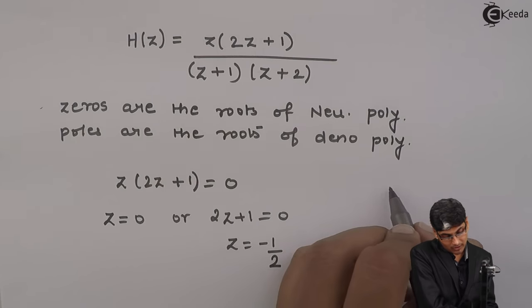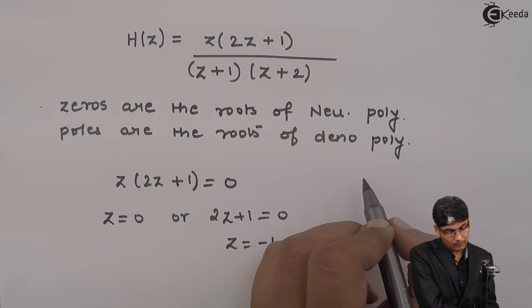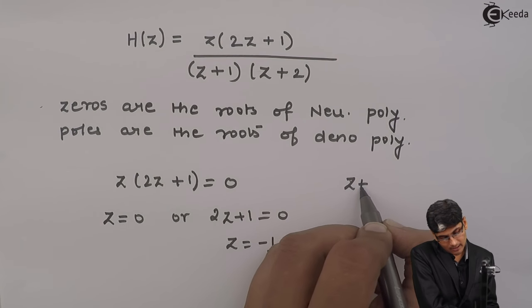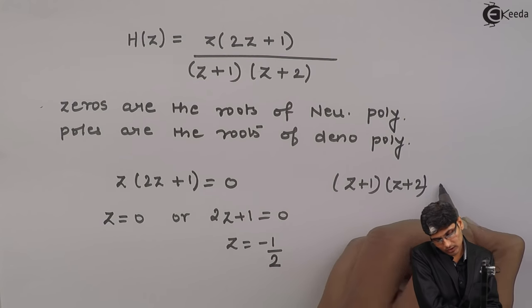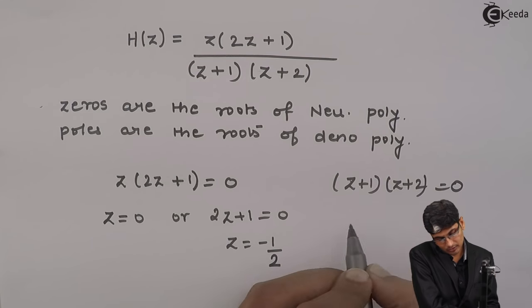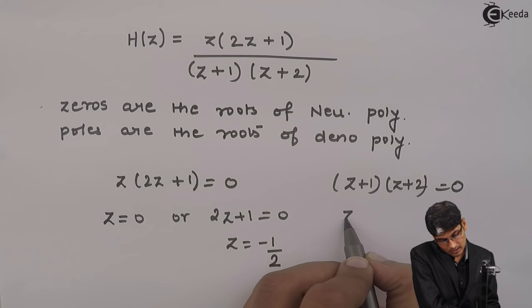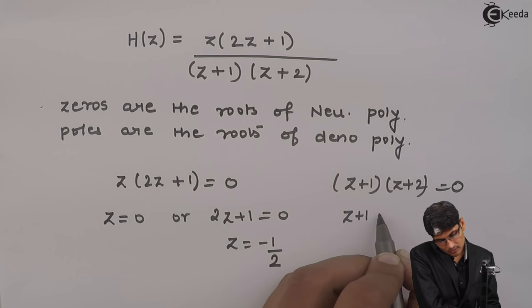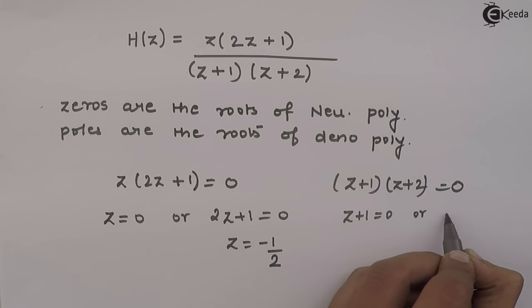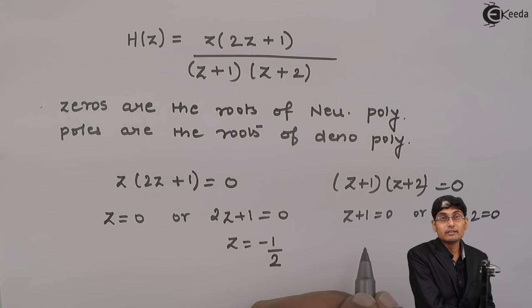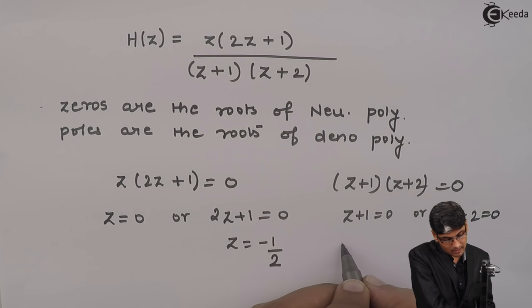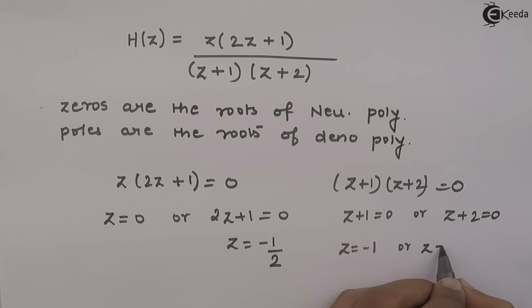Similarly, for the denominator polynomial, I get (z+1)(z+2) = 0. Then z+1 = 0 or z+2 = 0, which means z = -1 or z = -2.